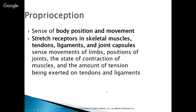Proprioception is the sense of body position and movement. There are stretch receptors in the skeletal muscles, tendons, ligaments, and joint capsules that sense movement of your limbs and the positions of those joints — the state of contraction of the muscles and the amount of tension being exerted on the tendons and ligaments. If there's something wrong with our proprioception, we don't know the position that each of our limbs is in, which creates an issue.